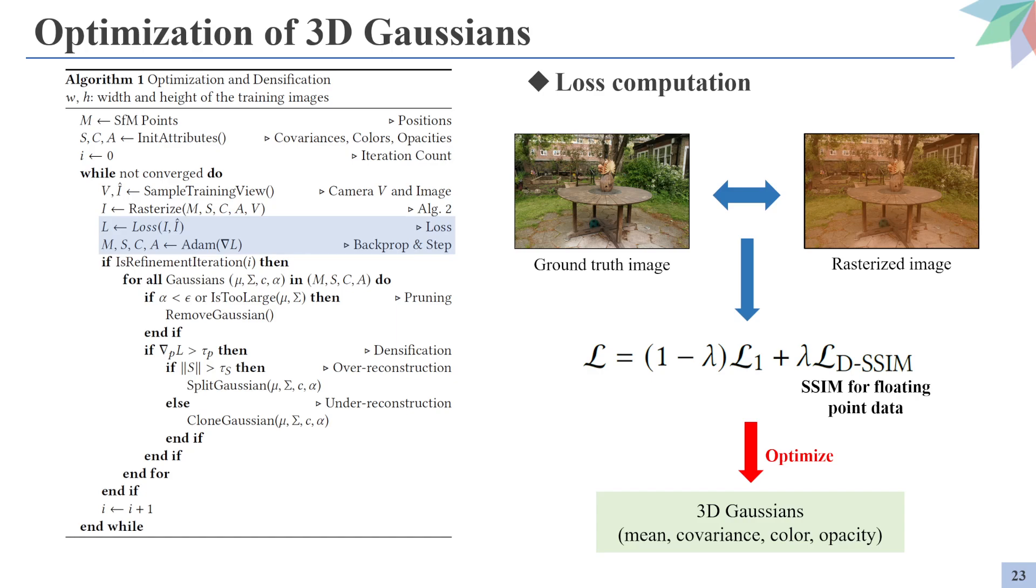The image from the rasterizer is now compared with the ground truth image using the objective function. The objective function is a weighted sum of an L1 loss with a D-SSIM loss, which is a SSIM loss designed for floating point data. The loss is then propagated to provide gradients for the attributes of the 3D Gaussians.